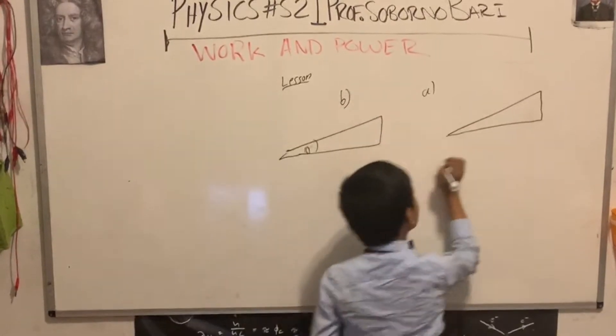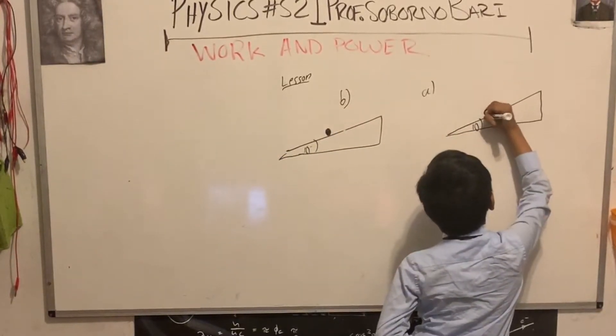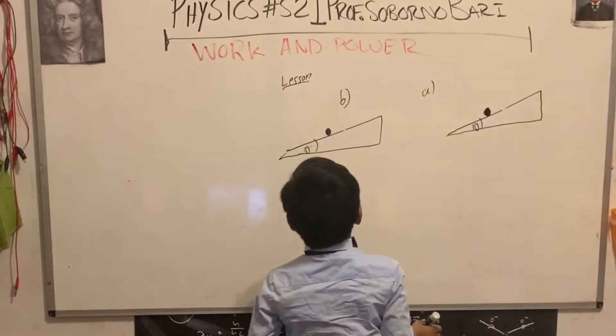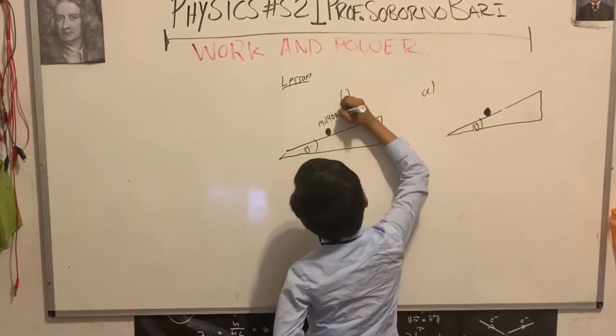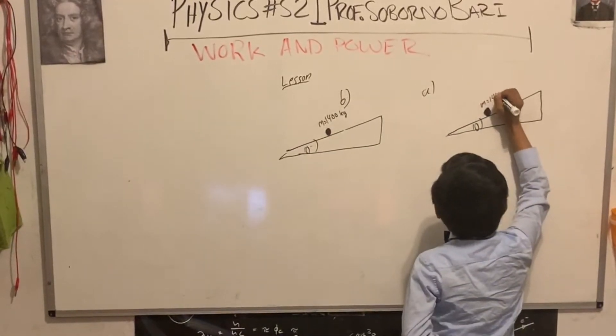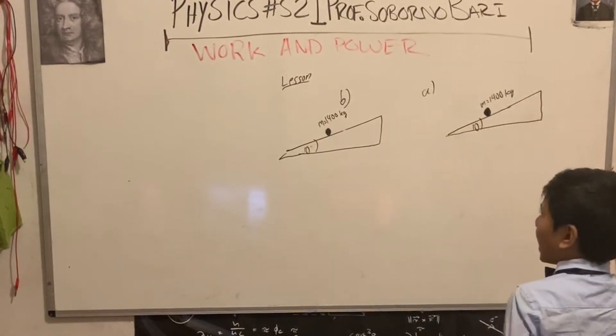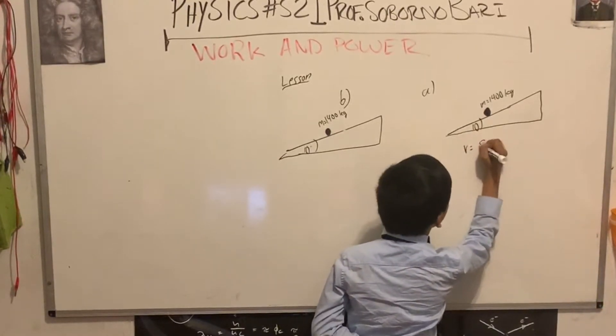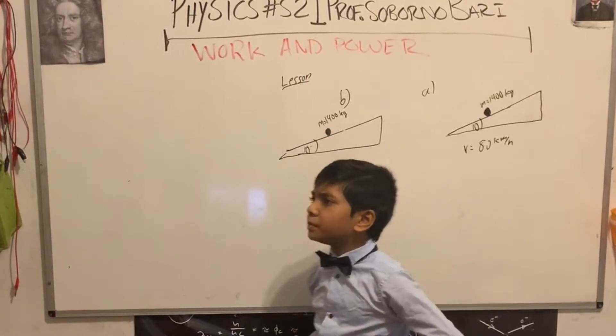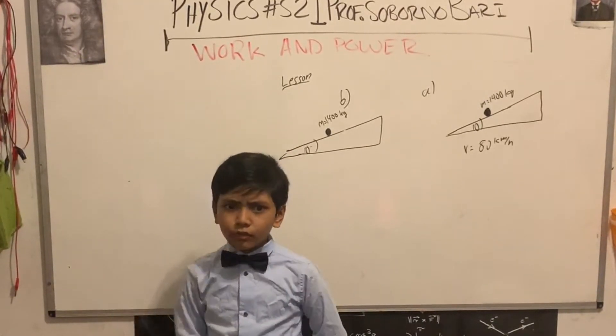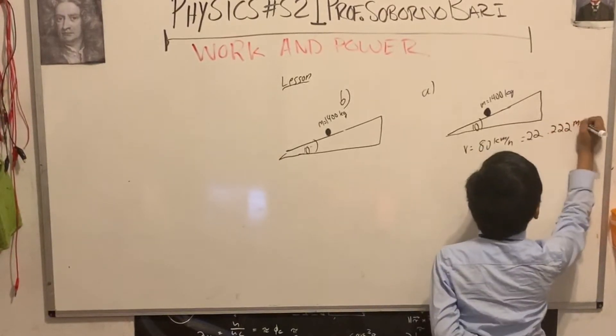Say you have a 1400 kilogram car. You represent it by a circle because we want to keep things simple. In scenario A, there is a constant velocity of 80 kilometer per hour, and with converting units, that should be 200 over 9, which is 22.2 meters per second.